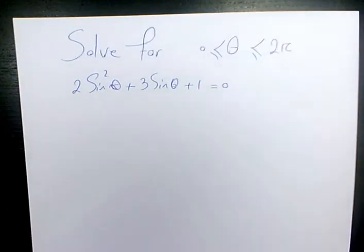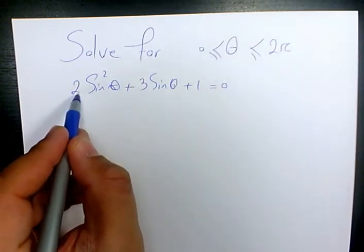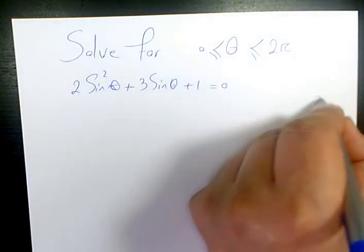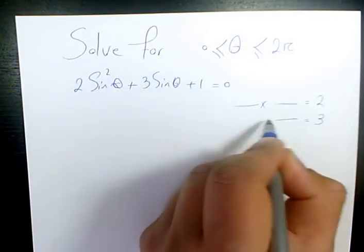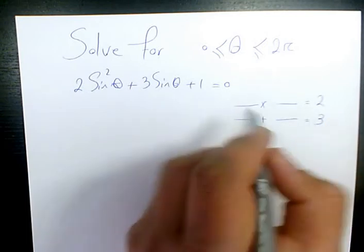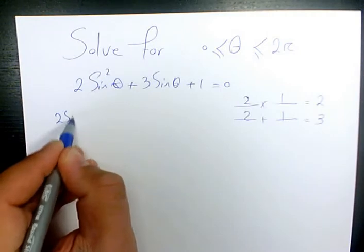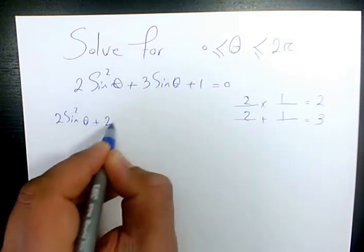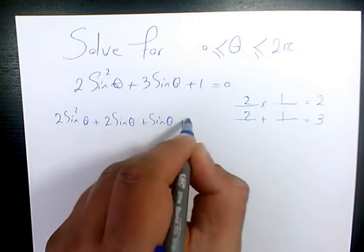First thing I want to do, I want to solve this quadratic equation using the factoring method. I'm going to use the AC method. 2 times 1 is 2, and here we have 3, so we're looking for 2 numbers that multiply to positive 2 and add to positive 3. So it's 2 and 1. This gives us 2 sine squared theta plus 2 sine theta plus sine theta plus 1 equals 0.